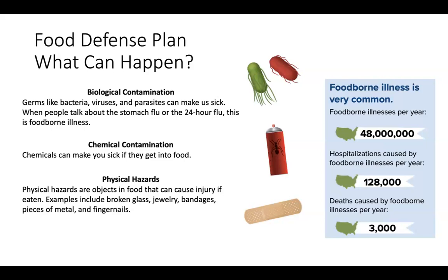Chemical Contamination. Chemicals can make you sick if they get into food. Store chemicals like soaps, cleaners, and sanitizers safely. Keep chemicals below food and work surfaces. A chemical should not be able to drip into food or onto work surfaces. Physical hazards are objects and food that can cause injury if eaten. Examples include broken glass, jewelry, bandages, pieces of metal, and fingernails.